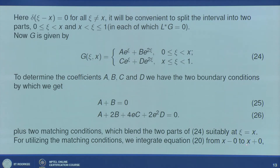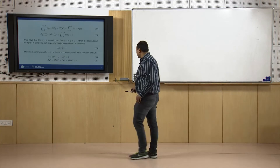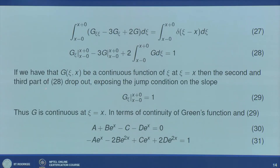Integrating L*g = δ(ξ−x) from x⁻ to x⁺, and using the filtering property gives 1 on the right-hand side. We can integrate to get [g_ξ] evaluated from x⁻ to x⁺ and so on. We assume that g(ξ,x) is a continuous function of ξ at ξ = x, which makes the second and third terms vanish, leaving the jump condition: [g_ξ] from x⁻ to x⁺ equals 1.